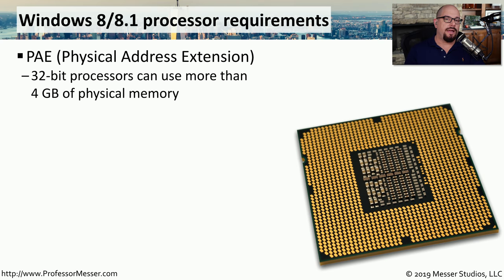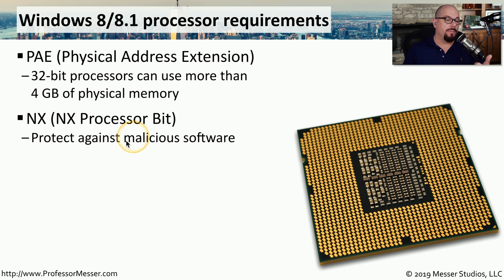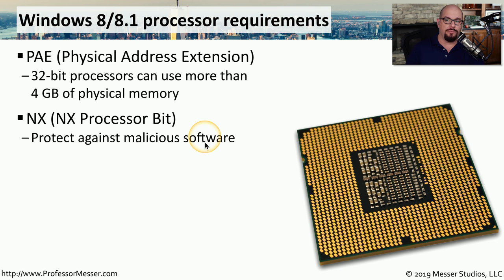Windows 8 and 8.1 have certain hardware requirements for the CPU. One requirement is that the CPU supports PAE, which stands for Physical Address Extension — this allows a 32-bit processor to access more than the traditional 4 gigabytes of physical memory. Another requirement is that the CPU supports the NX processor bit, which allows the CPU to protect against malicious software.